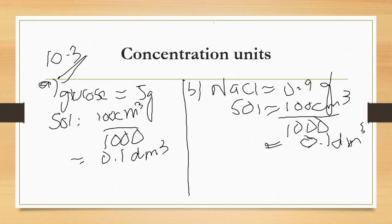When we apply the molarity formula using the molar mass, the formula is: molarity is equal to grams of solute divided by molar mass of solute, into decimeter cube of solution.